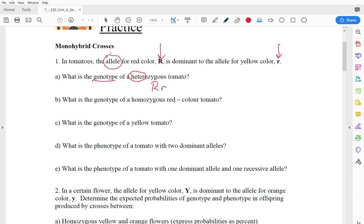Now we're going to do homozygous red. So if it's going to be red, it has to be a capital R, and if it's homo, meaning the same, then it's got to be two capital R's in a row. Now we're going to do a yellow tomato. There's only one way you can make a yellow tomato. That's with the recessive gene, and the recessive gene is the lowercase r. We're going to have two of those together. So that would be your yellow tomato.